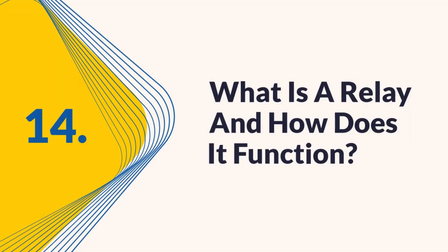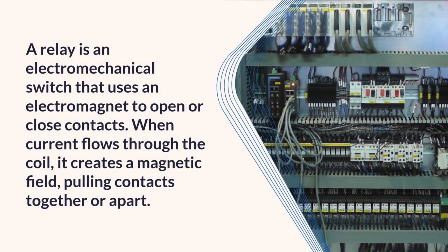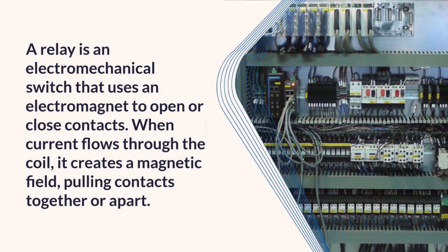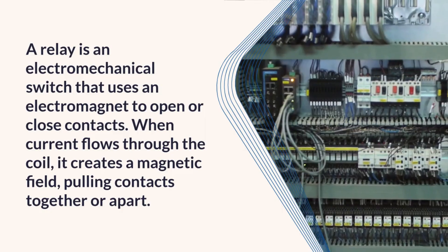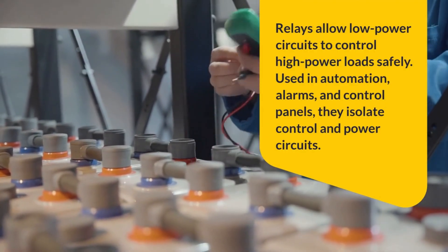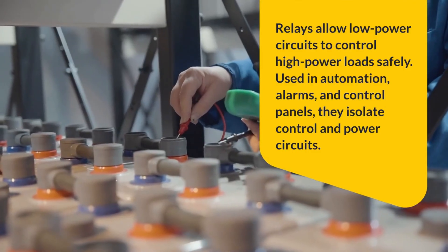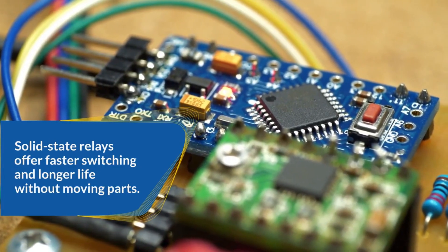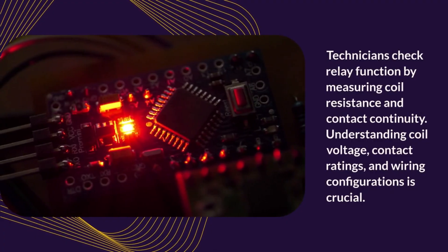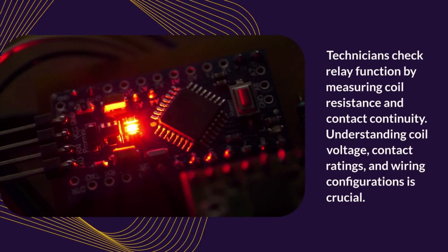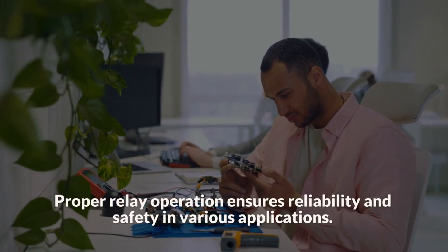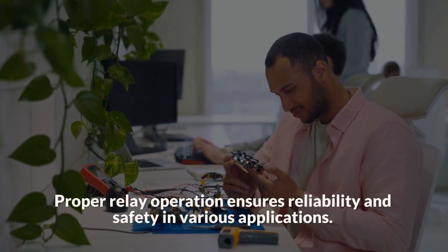Question 14: What is a relay and how does it function? A relay is an electromechanical switch that uses an electromagnet to open or close contacts. When current flows through the coil, it creates a magnetic field, pulling contacts together or apart. Relays allow low-power circuits to control high-power loads safely. Used in automation, alarms, and control panels, they isolate control and power circuits. Solid-state relays offer faster switching and longer life without moving parts. Technicians check relay function by measuring coil resistance and contact continuity. Understanding coil voltage, contact ratings, and wiring configurations is crucial. Proper relay operation ensures reliability and safety in various applications.